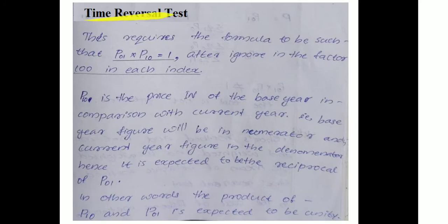The time reversal test requires the formula to be such that P01 multiplied by P10 equals 1. Here P01 and P10 are index numbers. We denote this as P01 into P10 equal to 1.